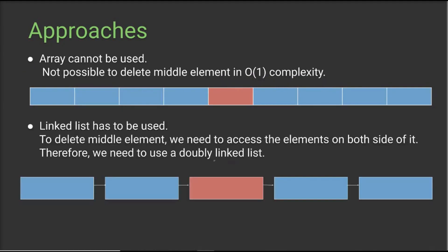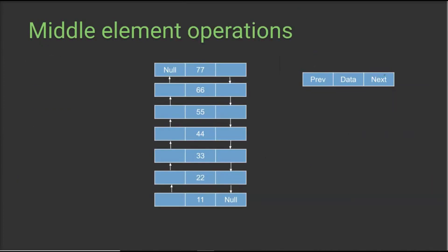The next choice is to use a linked list. If you want to delete the middle element of the list in O(1) time complexity, we should be knowing the previous node as well as the next node — only then it is possible to delete this node instantly. So it is important for us to use a doubly linked list. The node of the list contains the data as well as two pointers: one for the previous node and one for the next node.